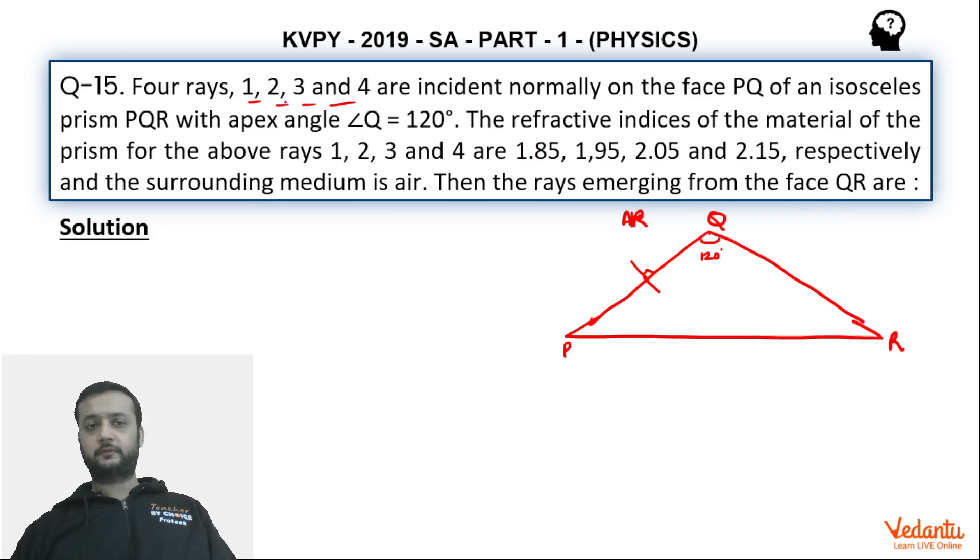The refractive indices of the four rays are 1.85, 1.95, 2.05 and 2.15. That means the refractive indices of four rays are different. For the first ray is 1.85, for the second ray is 1.95, for the third ray is 2.05 and the fourth ray is 2.15.